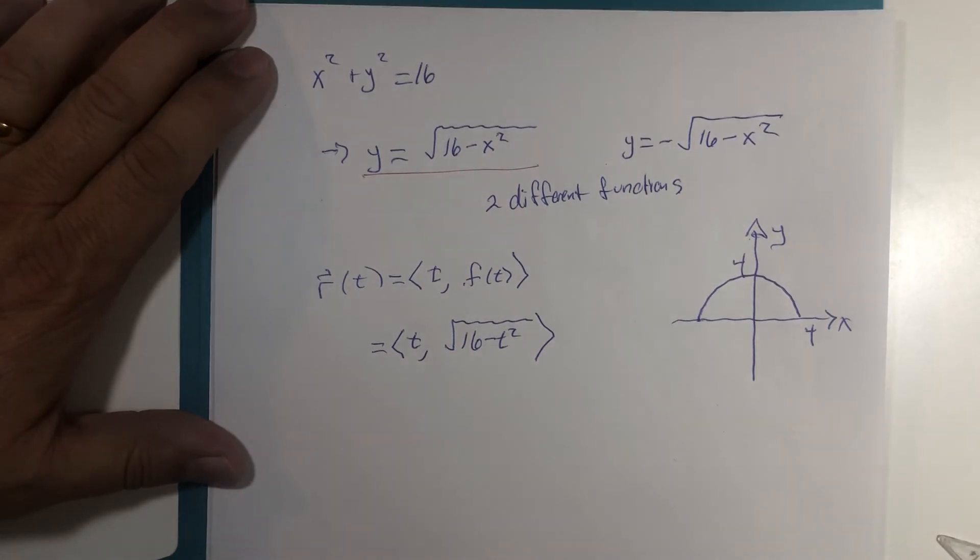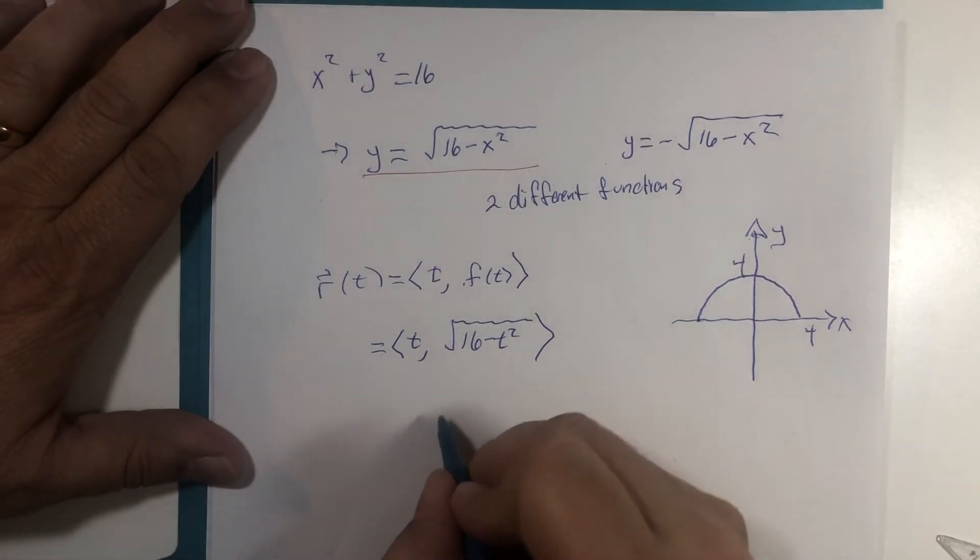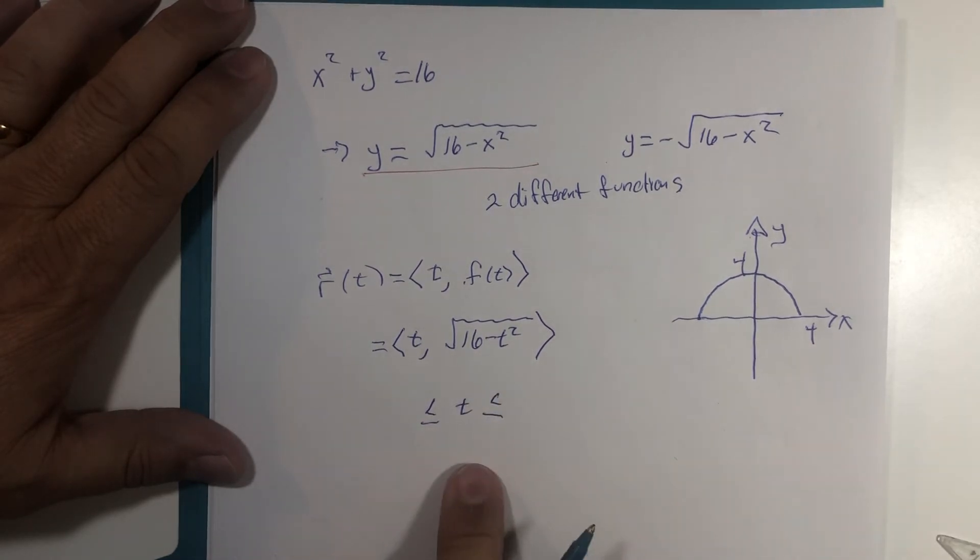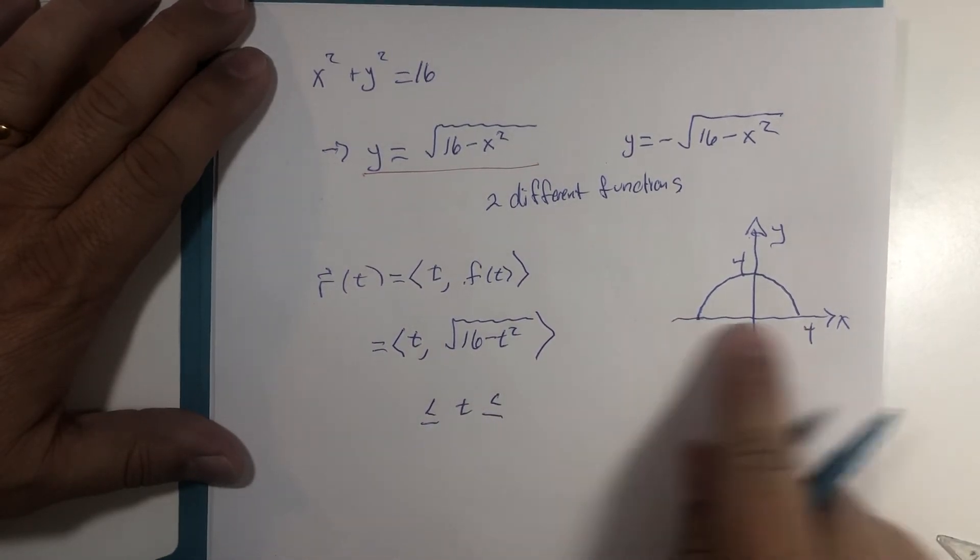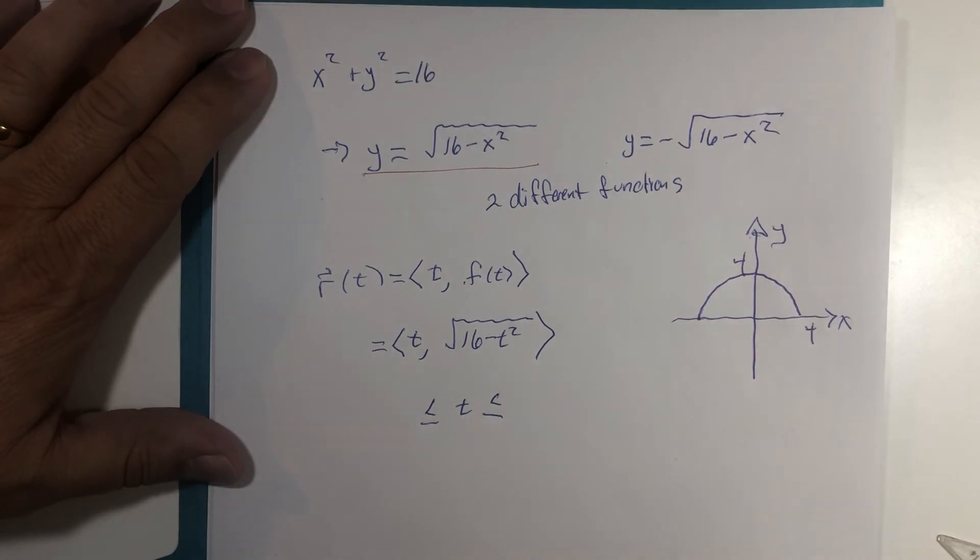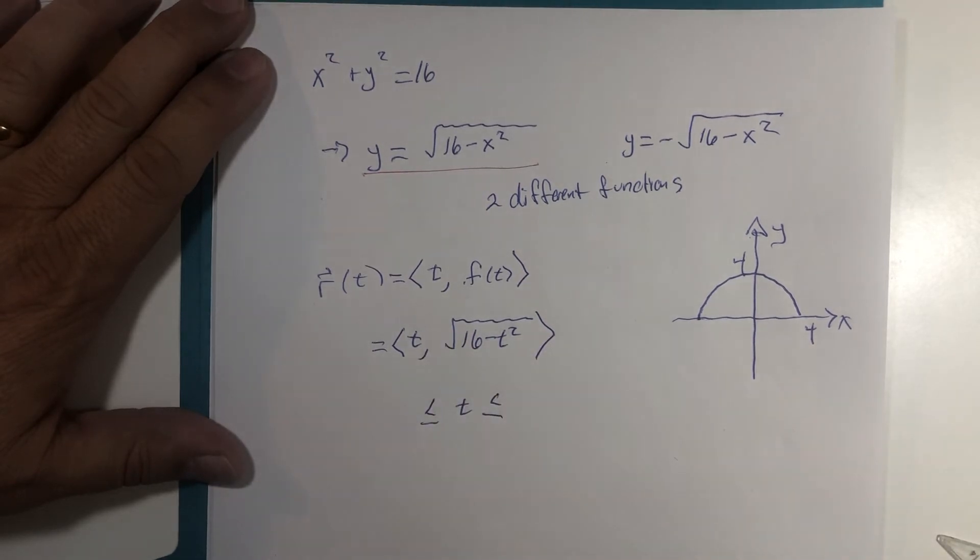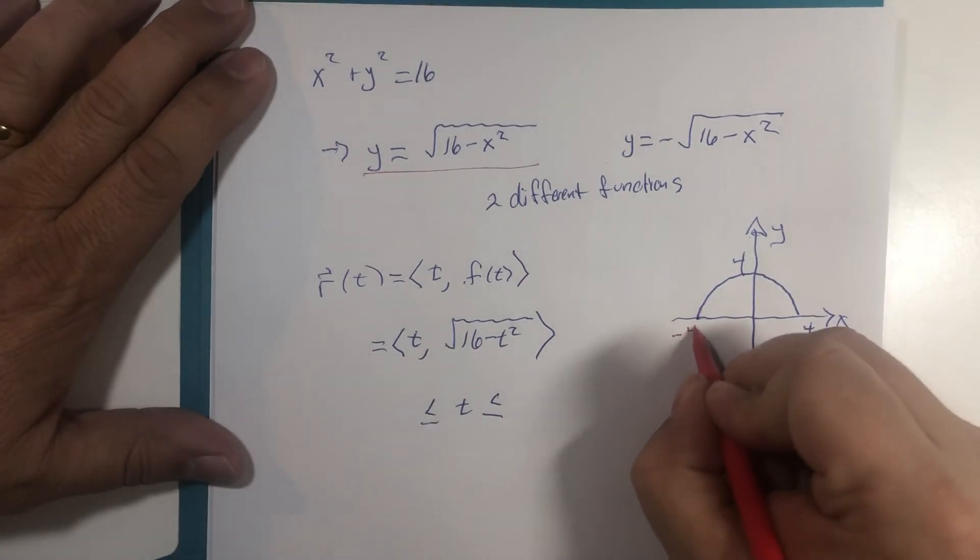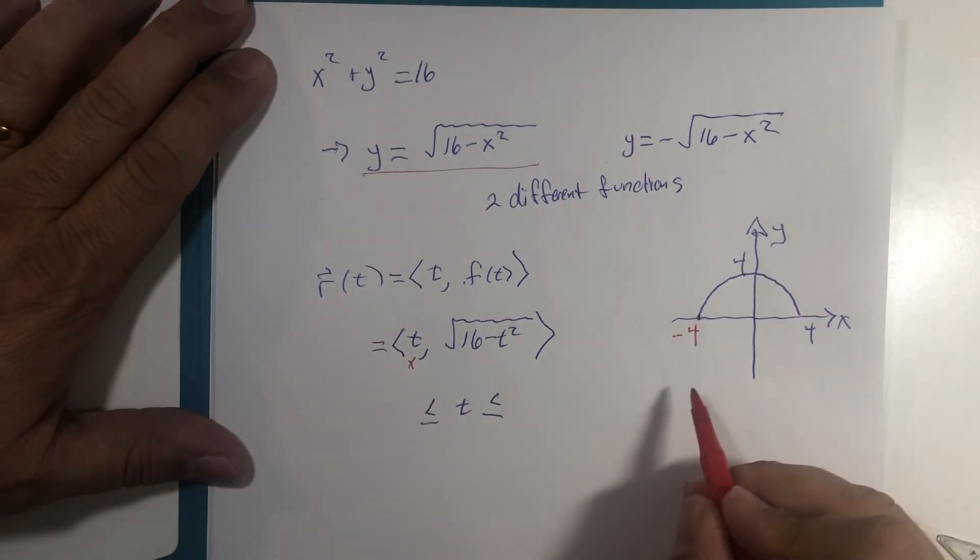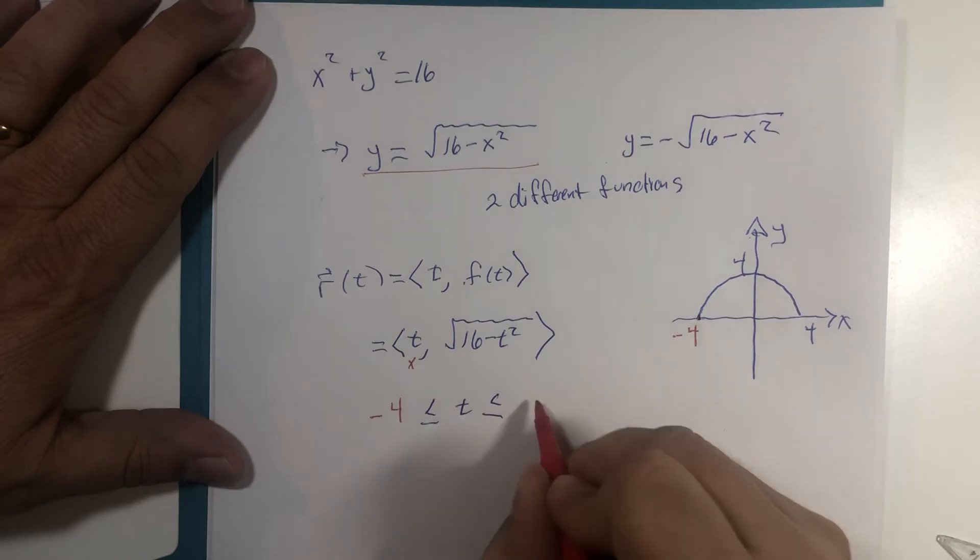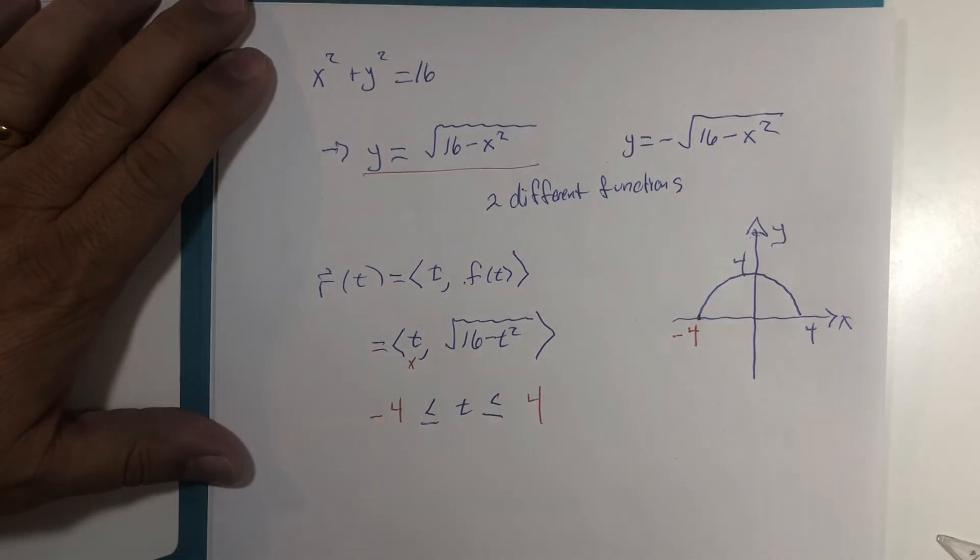So then I would ask the question, what are the t boundaries that might coincide with this half circle? Well, we could use the picture for help here. Since t is x, it looks like x goes between negative four and positive four.